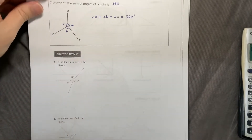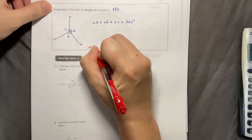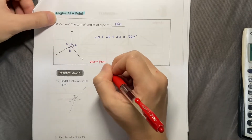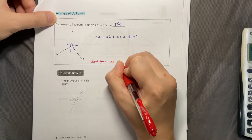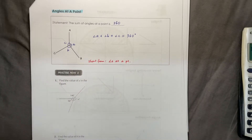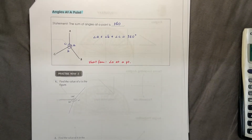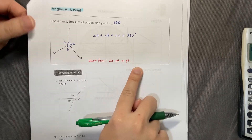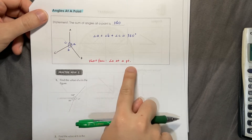What is the short form that we can write? The short form is: angles at a point, we just write the angle symbol then 'at pt.' with a dot. You don't have to write the full word. But if the question asks for the reason, then maybe we have to write the full thing. For working purposes, just writing this short form will do.